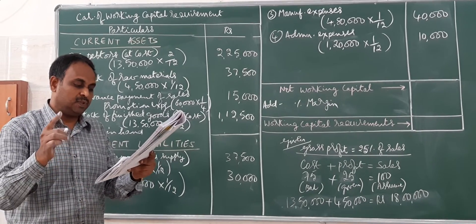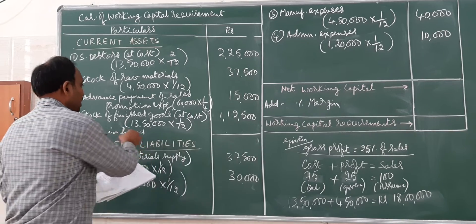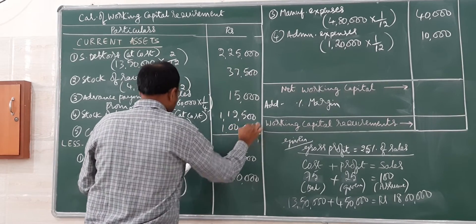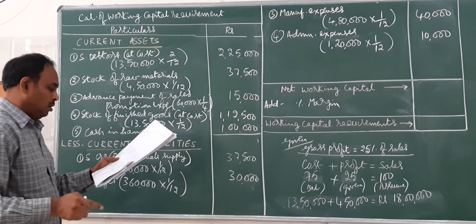The company keeps 1 lakh as cash in hand, which is a current asset.